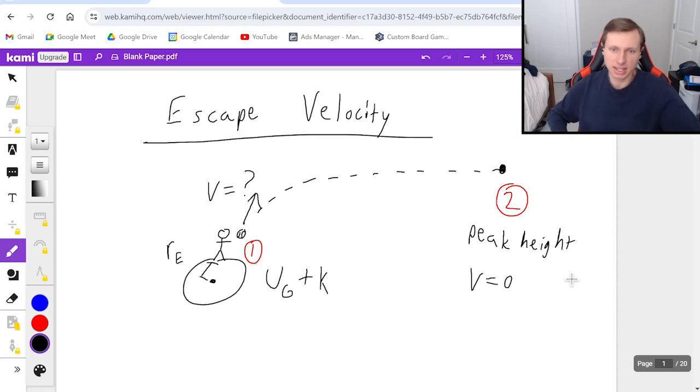So I'm saying the minimum amount of velocity needed to escape the Earth's gravitational pull, which means we're talking about the peak height, which is zero velocity. And so it's only going to have universal gravitation because it's some distance away, and I'll talk about that distance later.